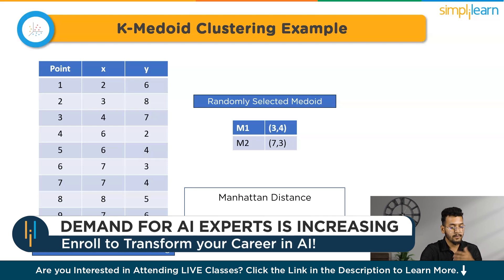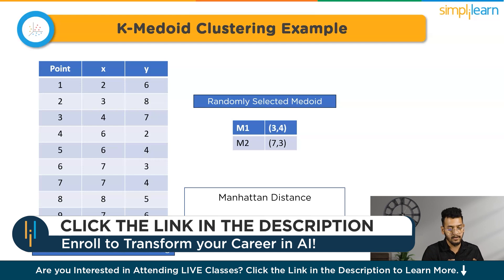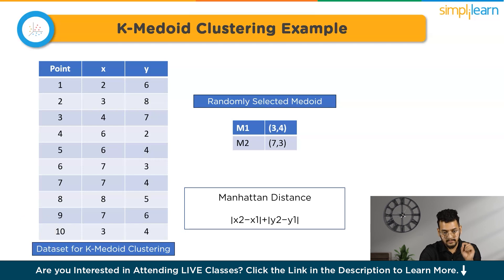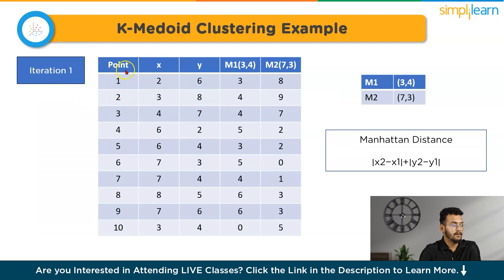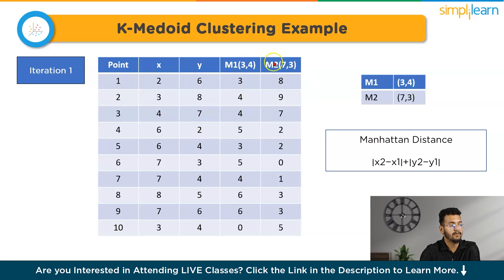The fourth step is to calculate the sum of distances of all non-medoid data points to their respective cluster medoid — this is called the cost. In iteration one, with M1 at (3,4) and M2 at (7,3), we calculate the Manhattan distances and obtain values such as 3, 4, 4, 5, 3, 3, 5, 4 for the respective data points.